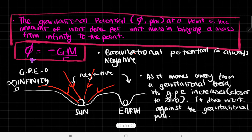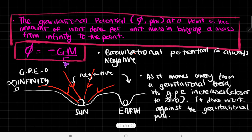And we have this equation, where phi equals the universal gravitational constant multiplied by the mass of whatever is creating the field — in this case, if this is going into the sun's gravitational field, then it would be the mass of the sun — divided by the separation r, which is the distance from the center of the sun to the center of the body of mass.